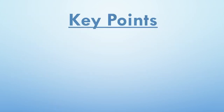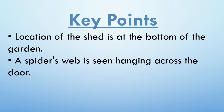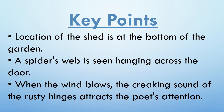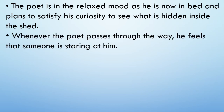Here are some key points related to the poem. The location of the shed is at the bottom of the garden. A spider's web is seen hanging across the door. When the wind blows, the creaking sound of the rusty hinges attracts the poet's attention. Whenever the poet passes through the way, he feels that someone is staring at him.